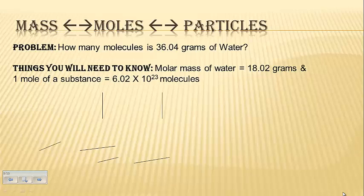Now from here, we can go from mass to particles, or particles to mass. So the problem here is how many molecules are in 36.04 grams of water. Things you need to know. You need to know the molar mass of water, 18.02 grams. You need to remember that one mole of a substance is 6.02 times 10 to the 23rd molecules. So right now, what I want you to do, take out your dominoes. Lay them out in front of you. Before I even show you, try and lay out your dominoes. Hit pause while you're doing that.